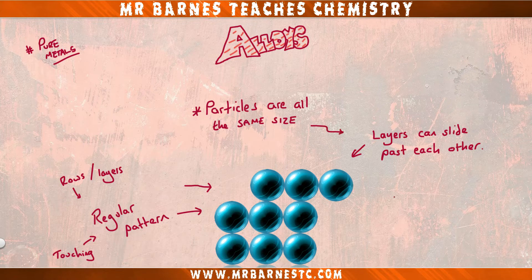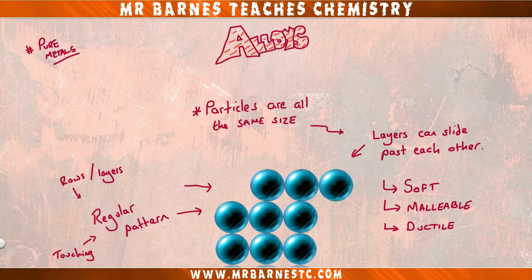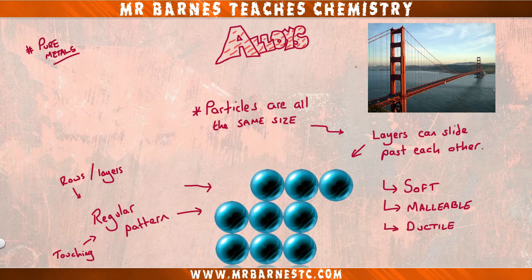This makes pure metals soft, which is why they are malleable — they can be hammered into shape — and ductile, which means they can be stretched into wires. Now if they're soft, it means you can't use them for things like bridges. That's where alloys come in.